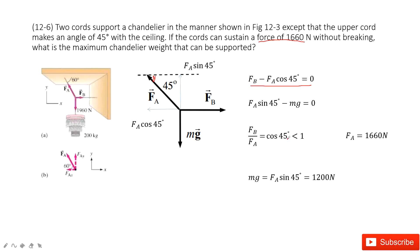Of course, cosine 45 degrees is smaller than one, so that means Fb is smaller than Fa. Therefore, Fa can reach the maximum force of the string, 1660 Newtons.